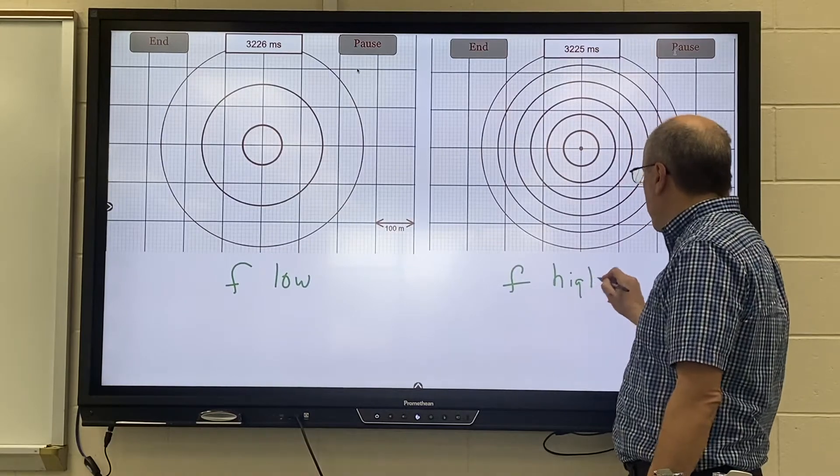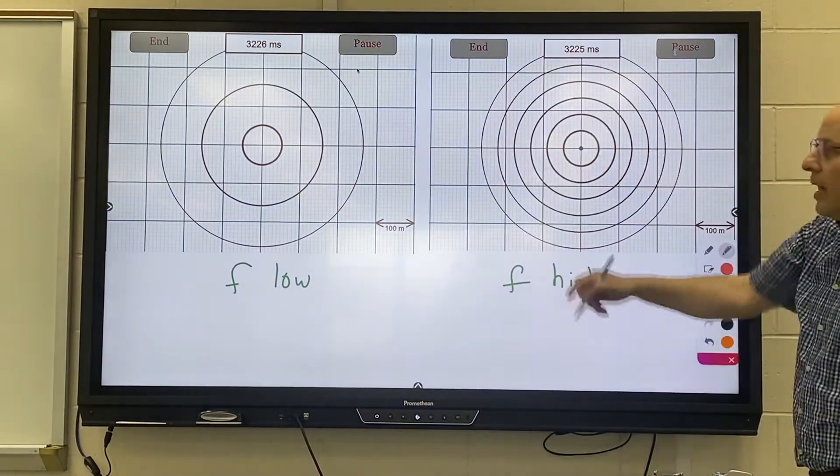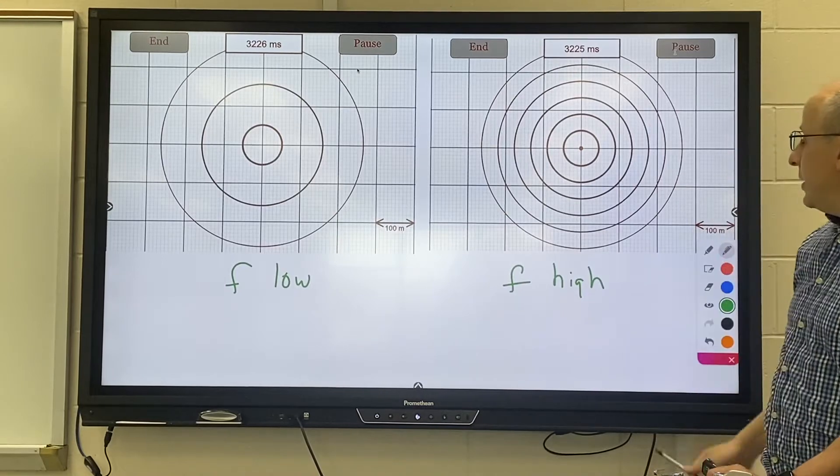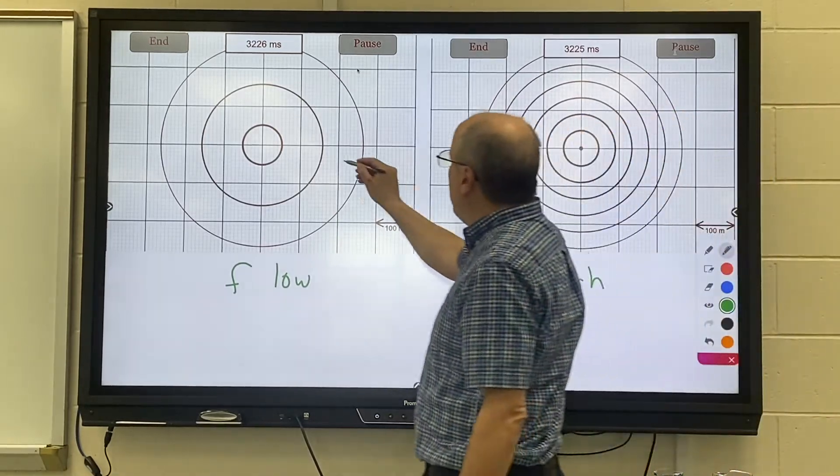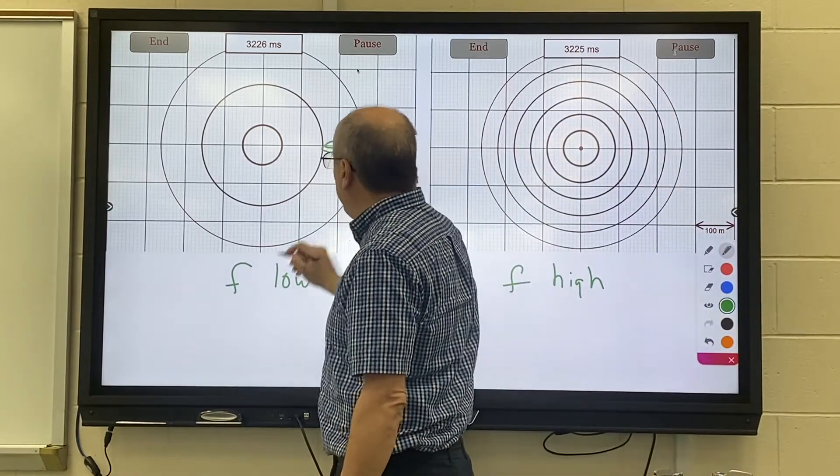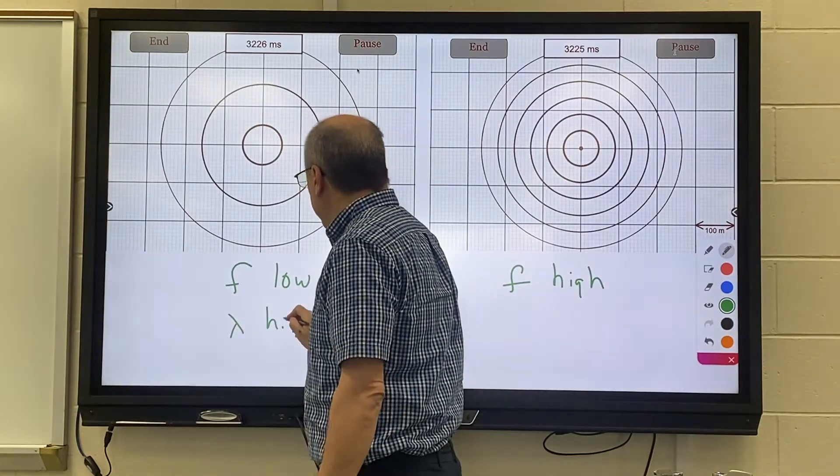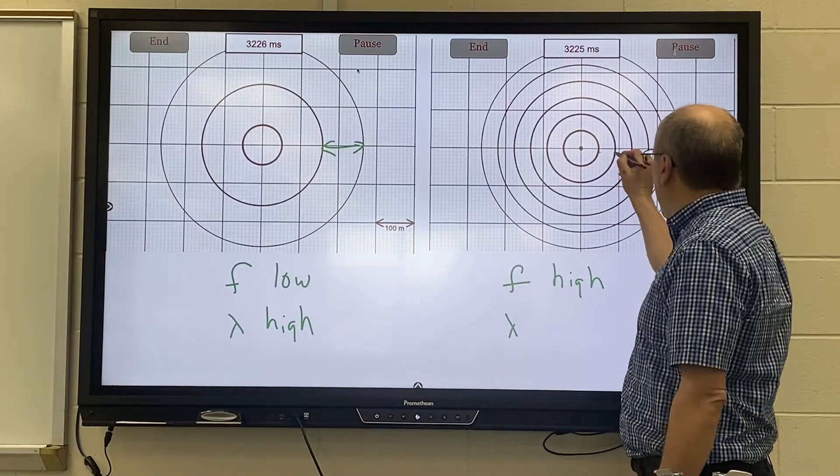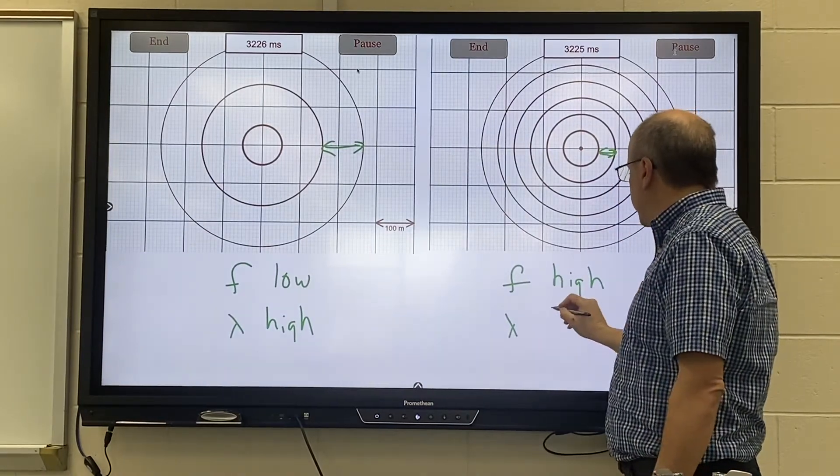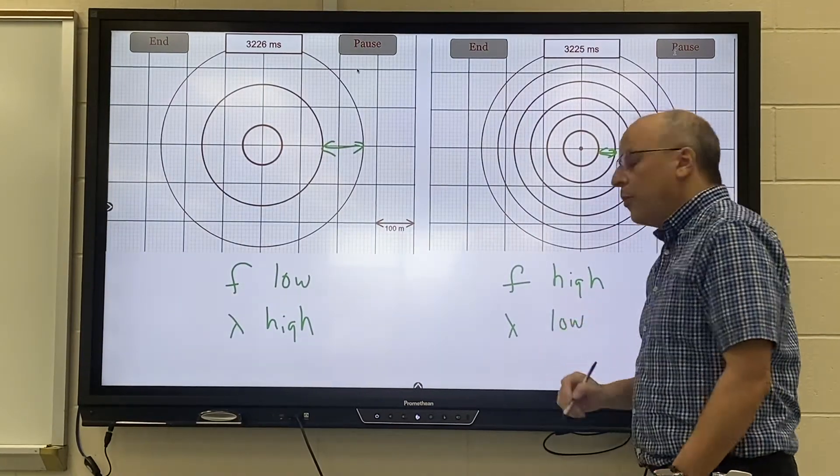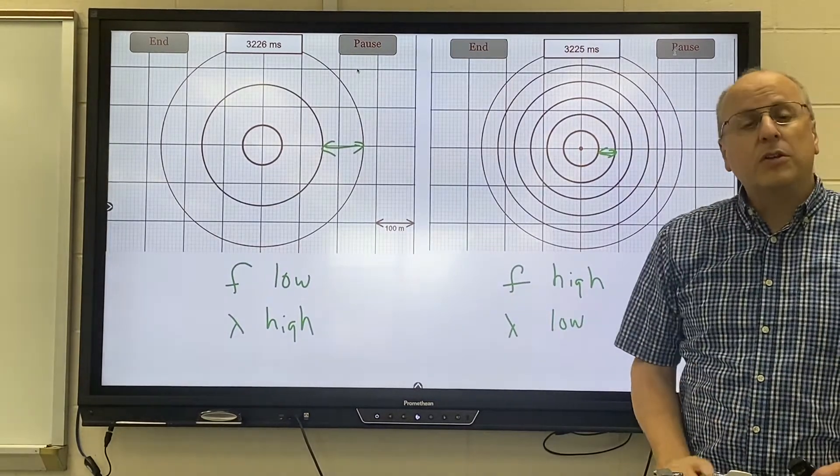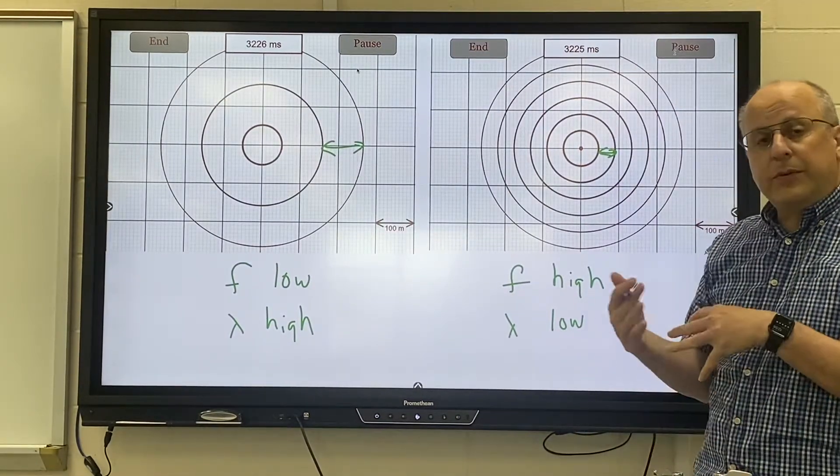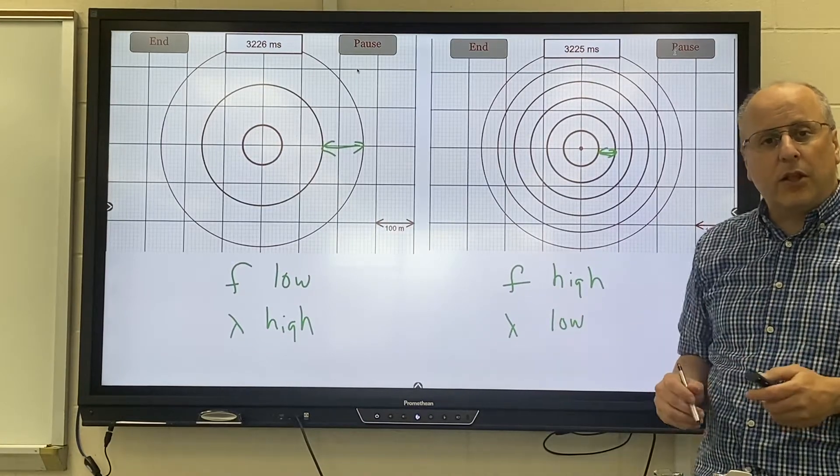So side by side, this was when the frequency was low and this was when the frequency was high. You'll notice the waves are far apart. You'll notice that when the frequency is high the waves are closer together. The wavelength will be lower, so we can see an inverse like relationship. As frequency gets higher the waves get closer together.